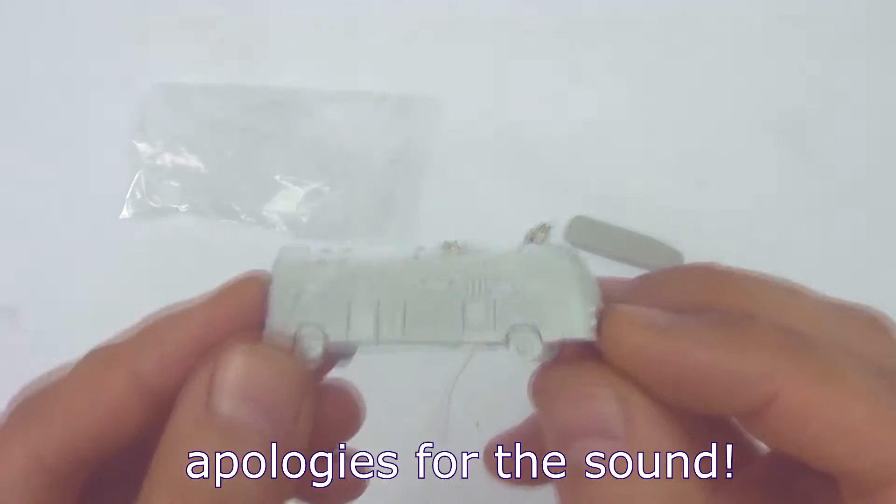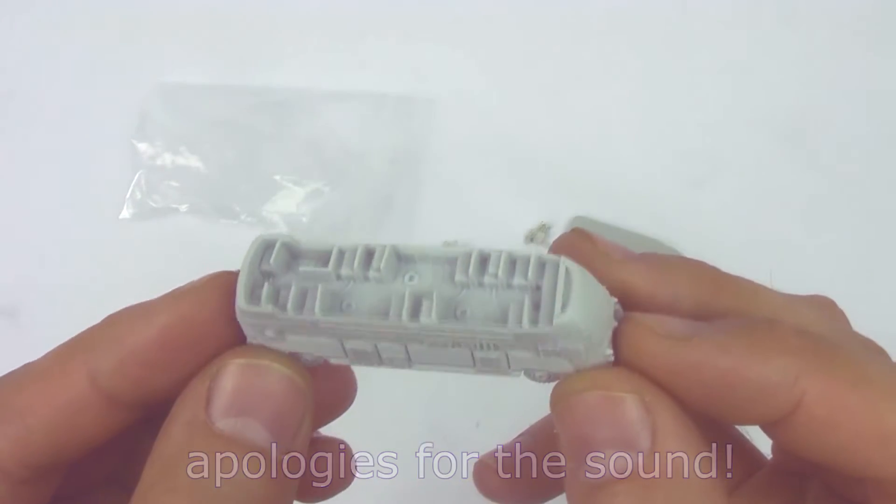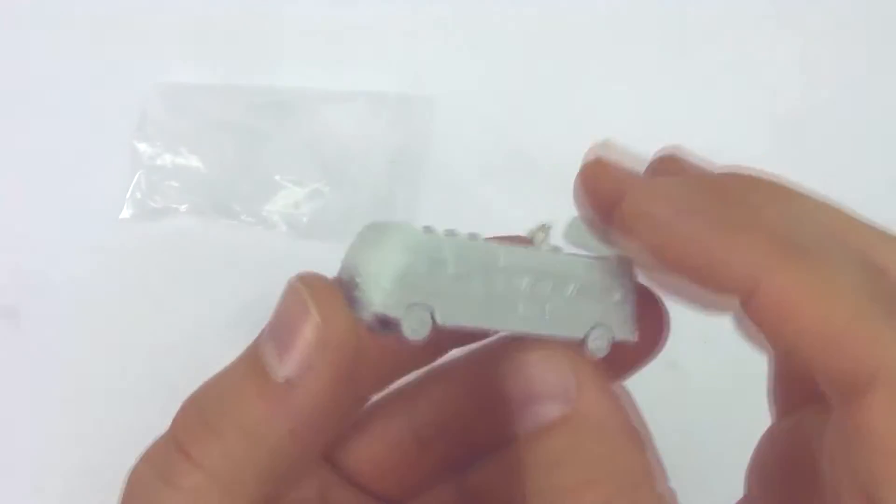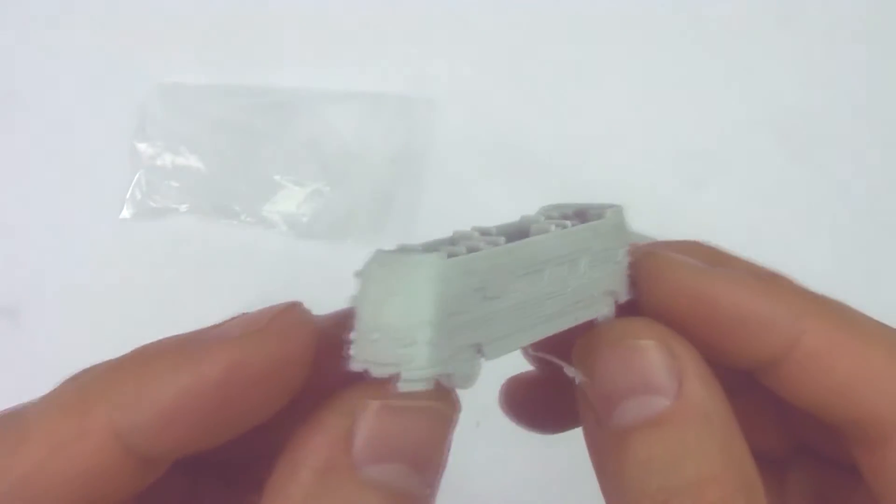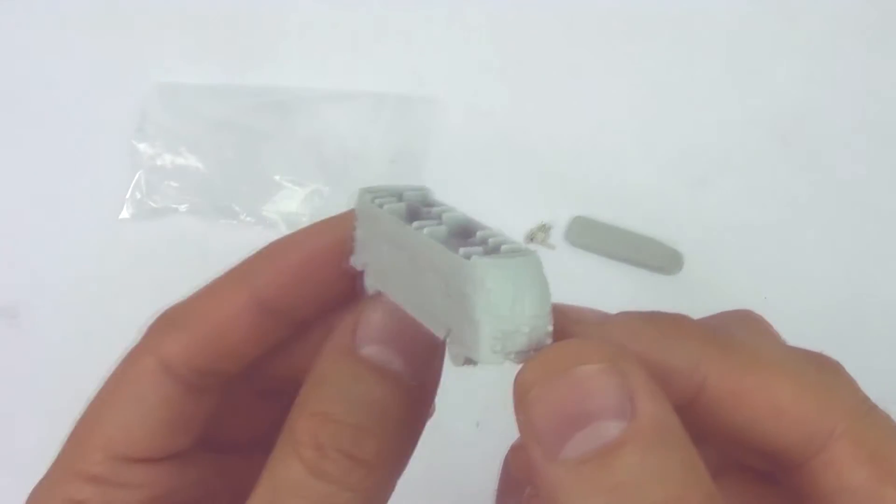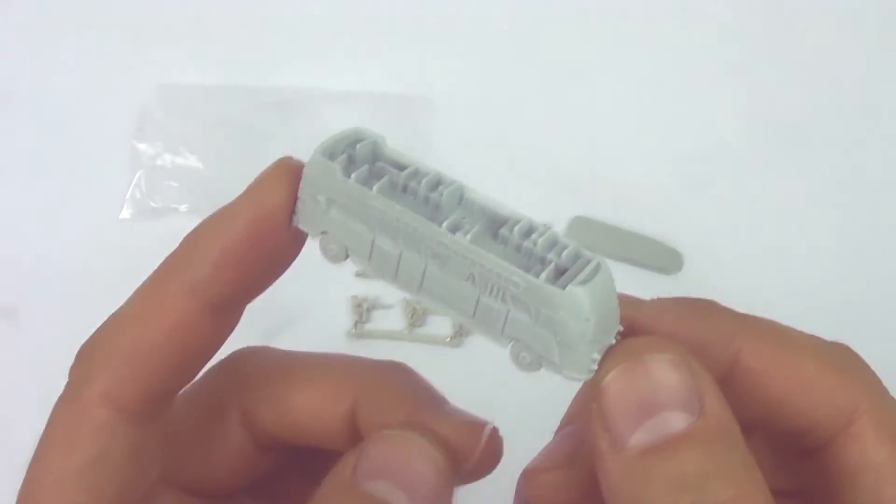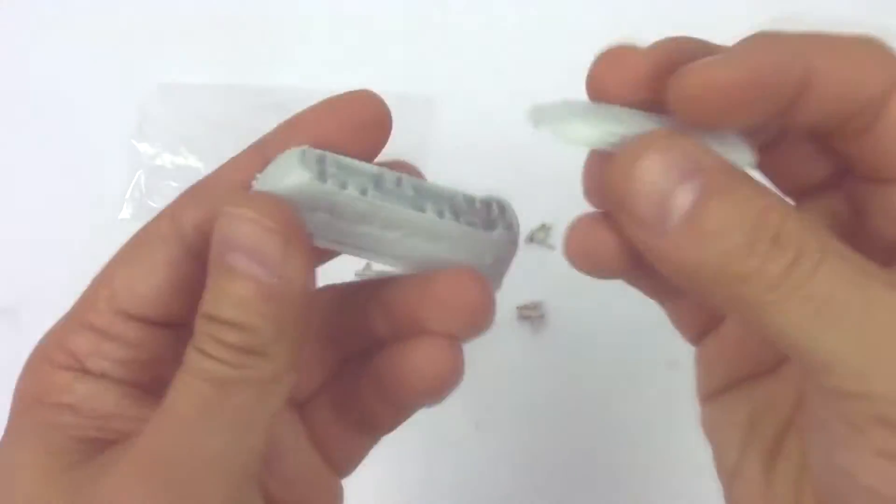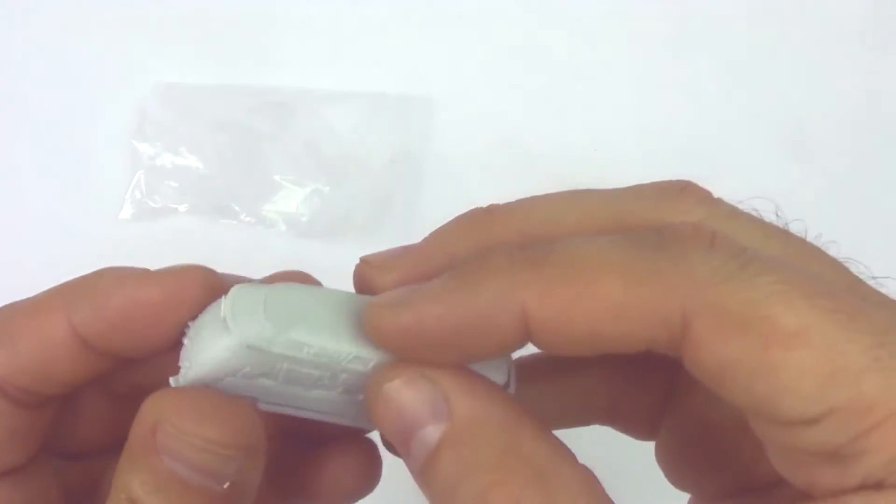So first of all we've got the bus itself and it is a double-decker. You can see it's got that art deco styling that is very evocative of the Drop Zone Commander setting, and you can glue on the top of the bus if you wanted.